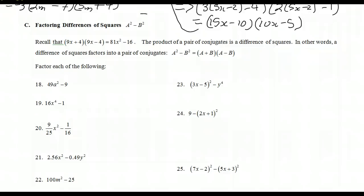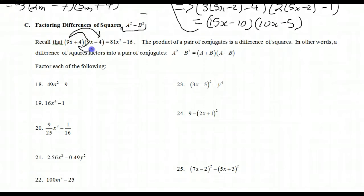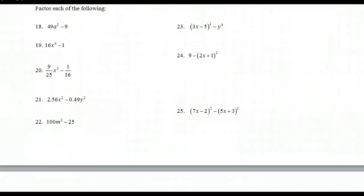Factoring difference of squares. If you FOIL a plus b times a minus b, you get a squared minus ab plus ab minus b squared — the middle terms cancel to zero, leaving a squared minus b squared. That's the product of a pair of conjugates — same two terms, once with a plus sign and once with a minus sign. To factor each of the following: for 49a squared minus 9, the square root of 49a squared is 7a and the square root of 9 is 3, so it factors as 7a plus 3 times 7a minus 3.